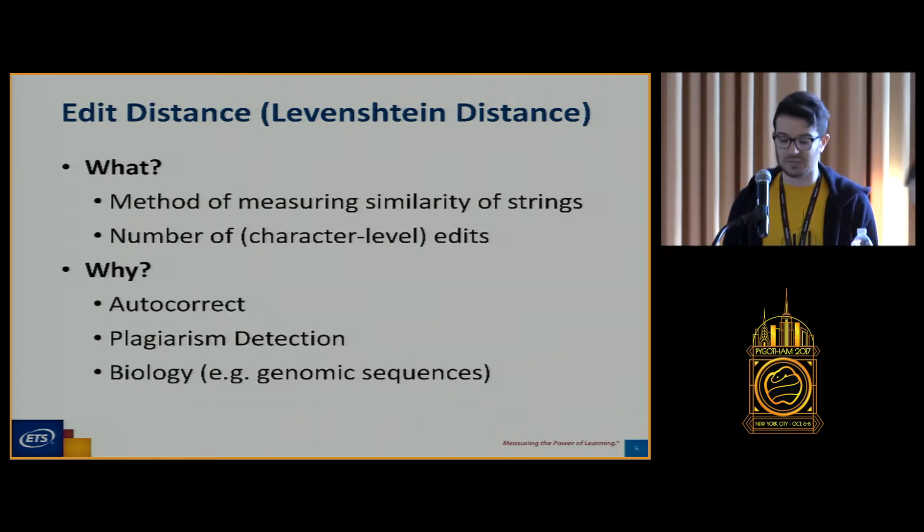So how are we going to do this? We are going to use what is called edit distance and specifically the key algorithm in this is Levenstein distance. So what is this? It's a method of measuring the similarity of strings. This is done with the number of character level edits. It is also a dynamic algorithm so it runs very fast. Why is this used? It's used in things like autocorrect.